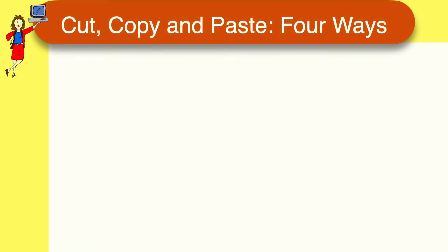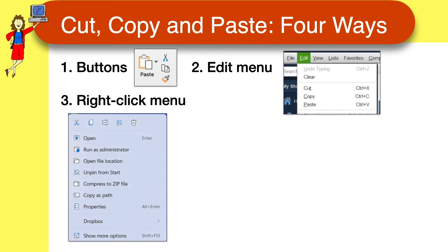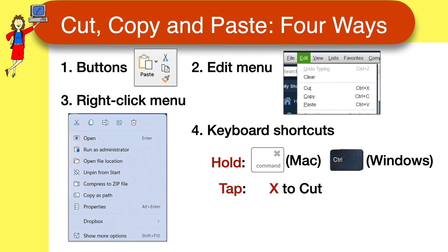Once you have your selection, you can cut, copy, and paste any of four ways: from buttons, if the app you're using has them; from the Edit menu, if the app has menus; from the right-click menu; or with keyboard shortcuts. Hold the Command key on a Mac, or the Control key on a Windows or Chrome computer, and tap X to cut, C to copy, or V to paste. And don't forget to release the keys when you're done.